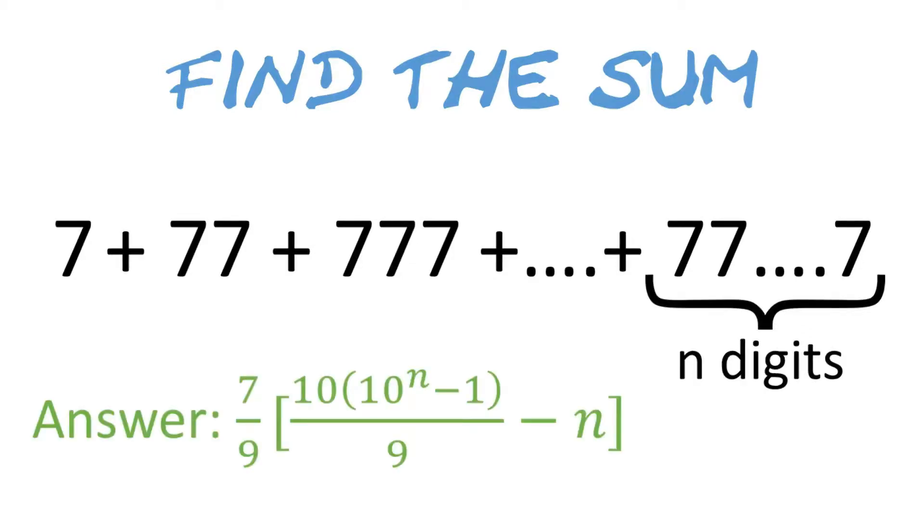The answer to this problem is 7 ninth times the following quantity, where the first term is a fraction whose numerator is 10 times 10 raised to the power n, minus 1, and the denominator is 9, and then we subtract n from this term.